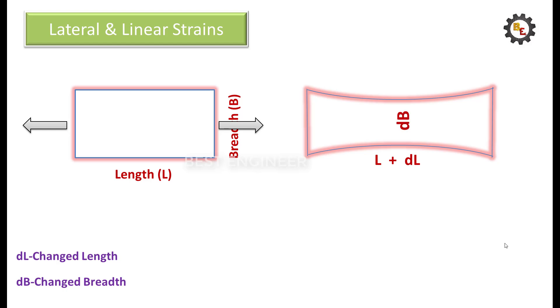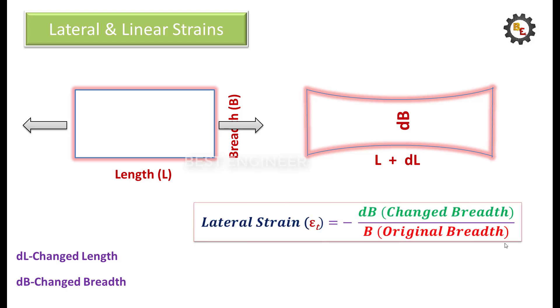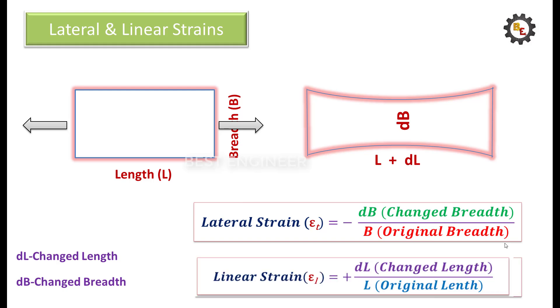Now, the lateral strain is the ratio between change in breadth to original breadth. The linear strain is the ratio between change in length to original length.